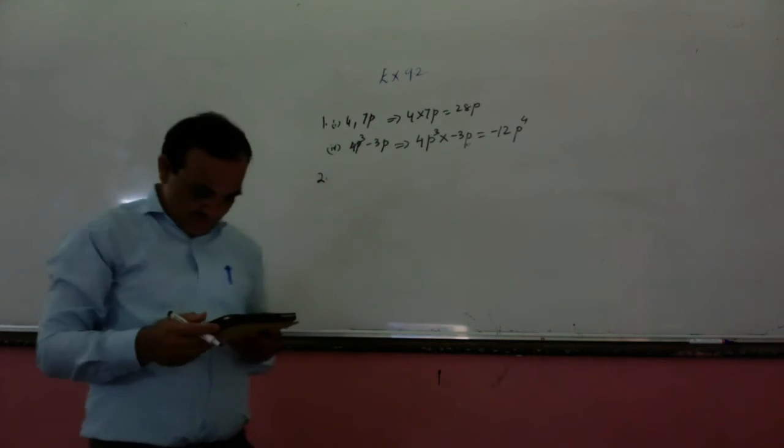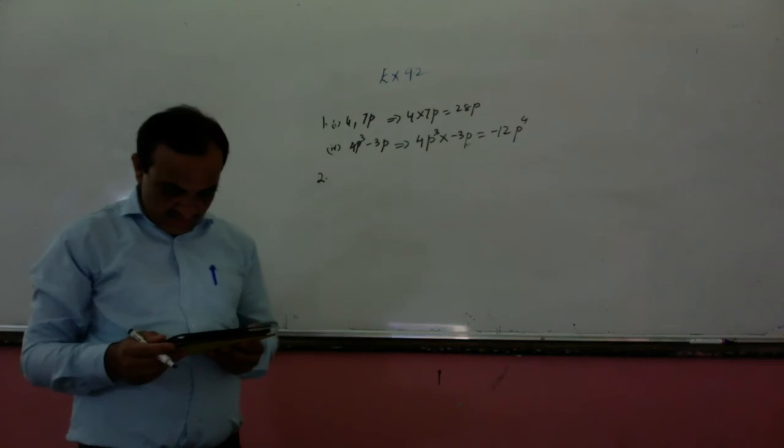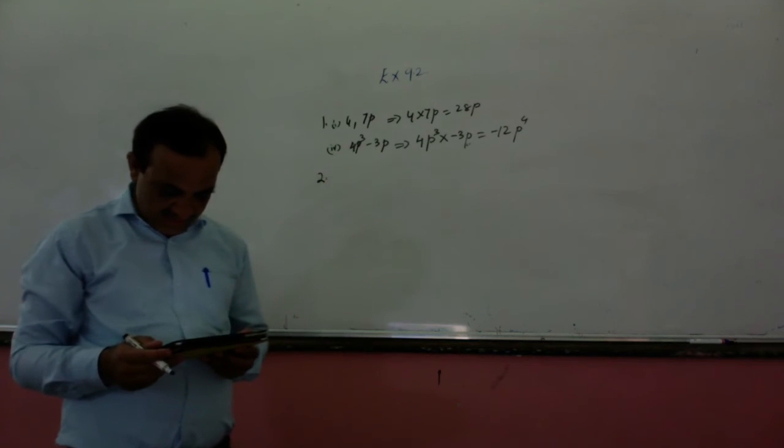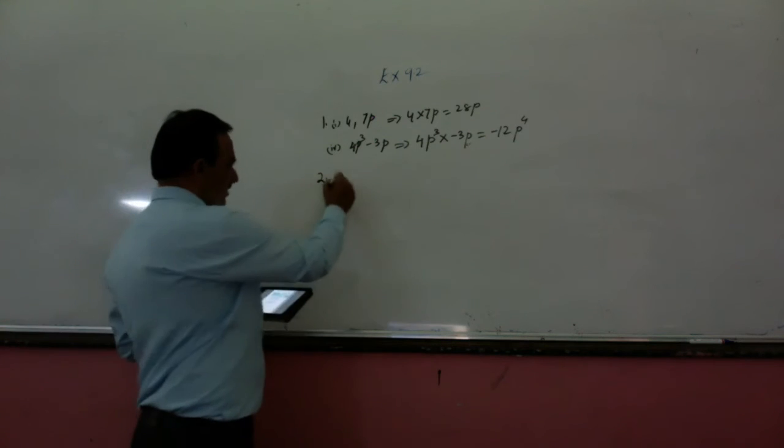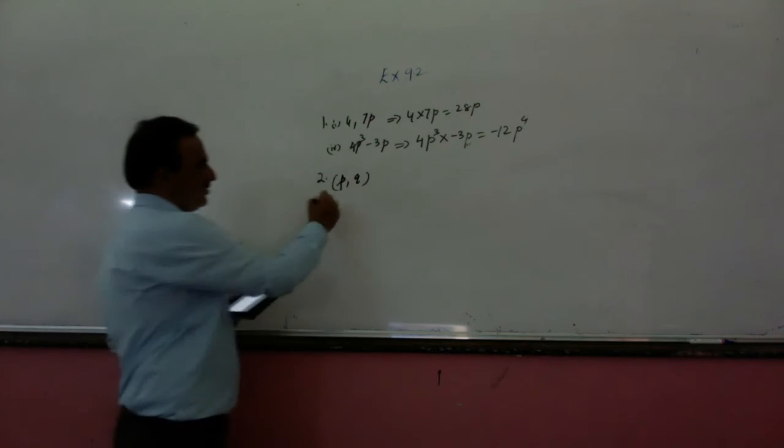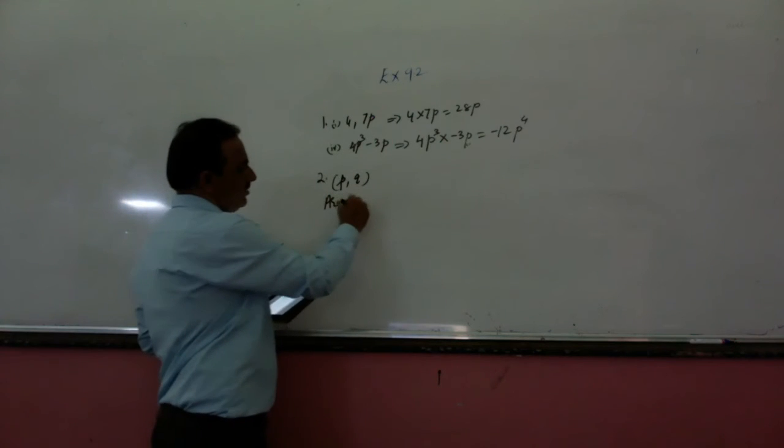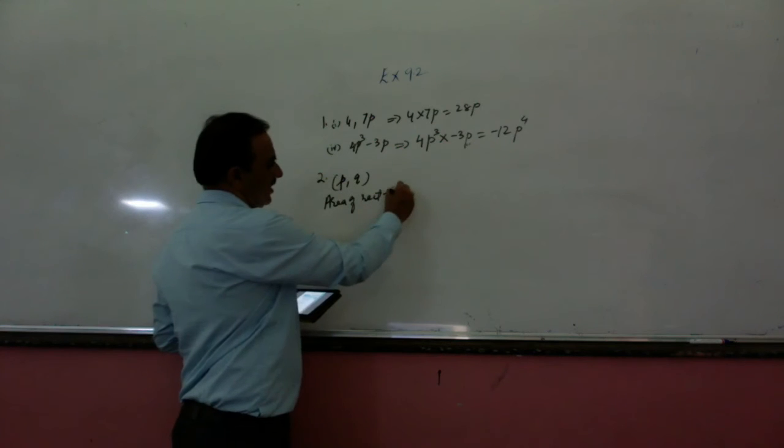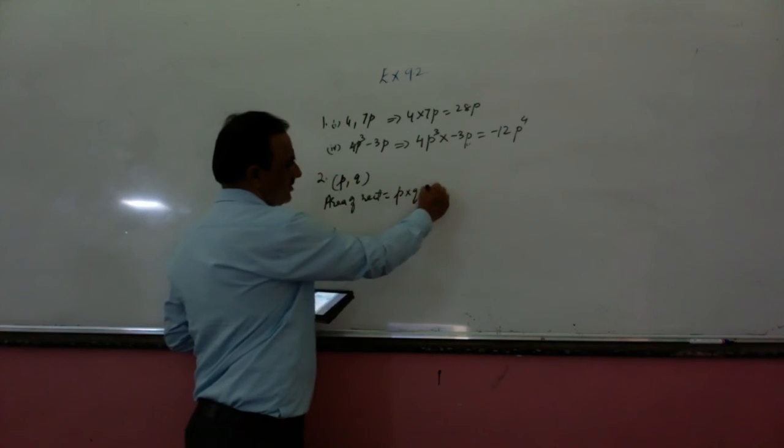Now second question: Find area of the following polynomials whose length and breadth are given. So this very easy question. Suppose you can say first is P and Q. This length is P, breadth is Q. So area of rectangle will be length into breadth, and it will be P into Q.